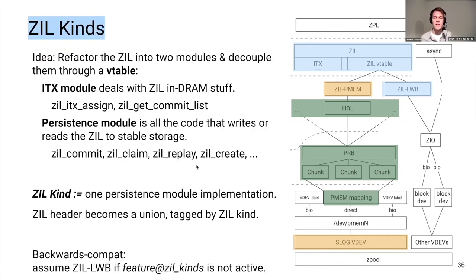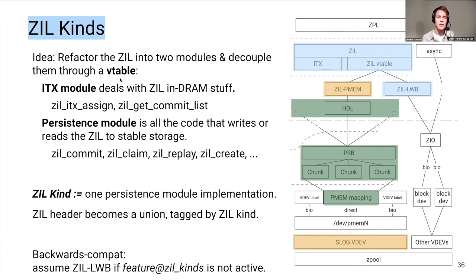The idea of ZIL kinds is to split the ZIL code into two modules: the ITX module, which deals with anything happening in DRAM — keeping track of unwritten log records and figuring out which records need to be written during ZIL commit — and the persistence module, which is all the code that actually writes the ZIL to stable storage, determines the persistent data structure, reads the ZIL after a crash, and drives the replay process. With this refactoring, I introduced a vtable that decouples the persistence API from the general ZIL API, allowing different implementations to coexist at runtime — these are called ZIL kinds.